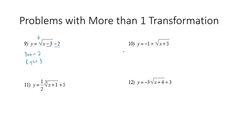Looking at number ten, we don't have a number added here, but this negative one could be moved to here, so now we do have a number. It's down one, and the plus five on the inside means it goes to the left five. Looking right in front of the radical, there's a positive, so it's not reflected, and there's not a number, so it's not dilated.